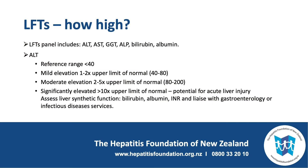If the ALT is more significantly elevated — greater than 5 or 10 times the upper limit of normal, a level of greater than 400 — then it may be appropriate to liaise more urgently with your gastroenterology or infectious diseases services. In that situation it would also be important to note whether there was any impairment in liver function, seen if the bilirubin was elevated, the albumin was low, or the INR was elevated.